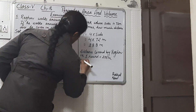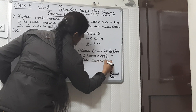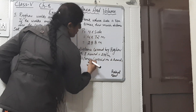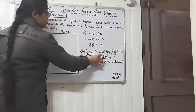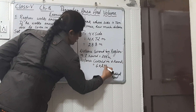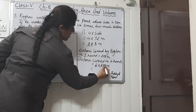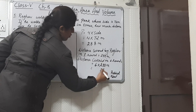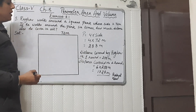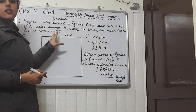He has taken six rounds of this park, so the distance covered in six rounds will be the distance covered in one round multiplied by six. This is 6 × 288 meters, which equals 1728 meters. So the total distance covered by him is 1728 meters.